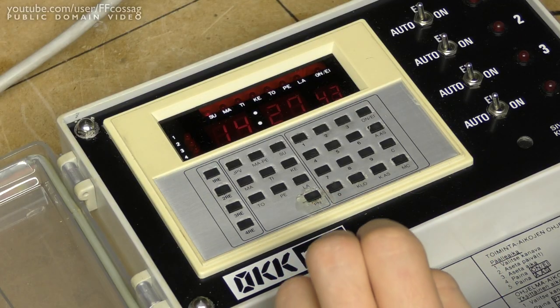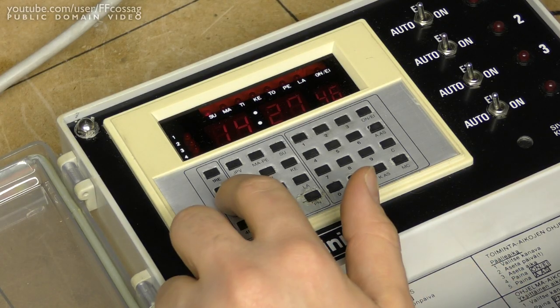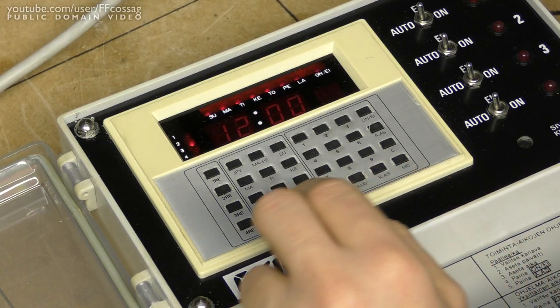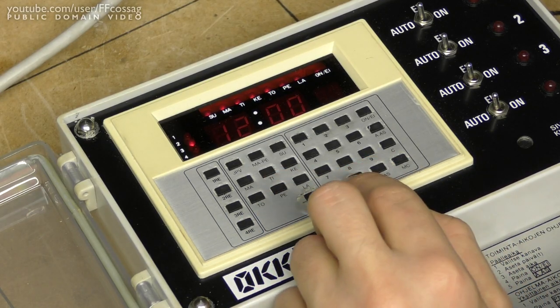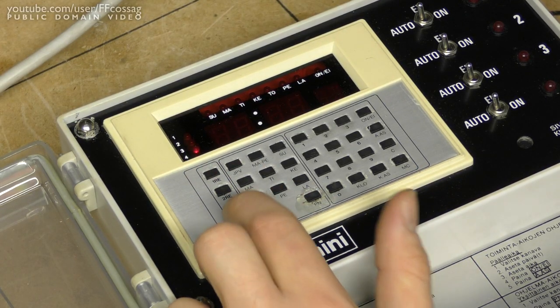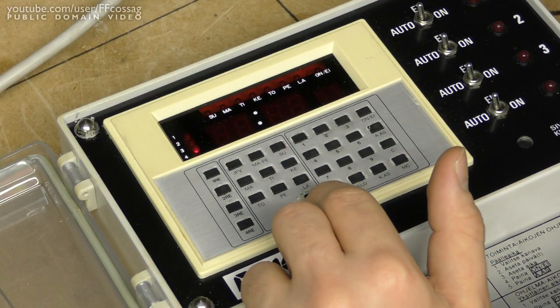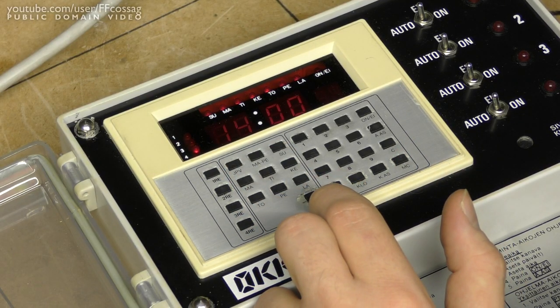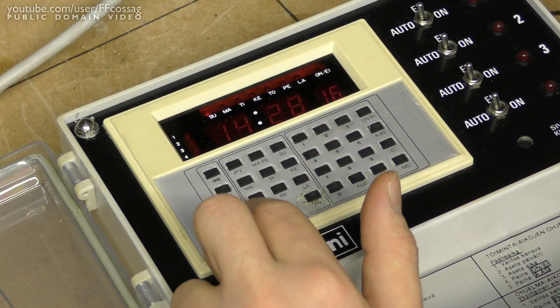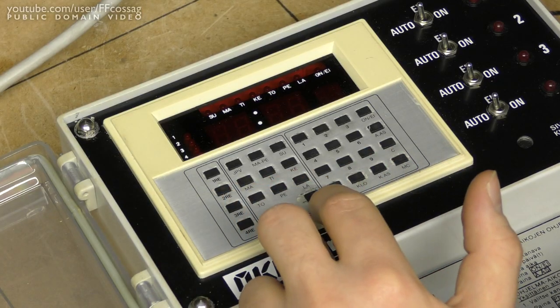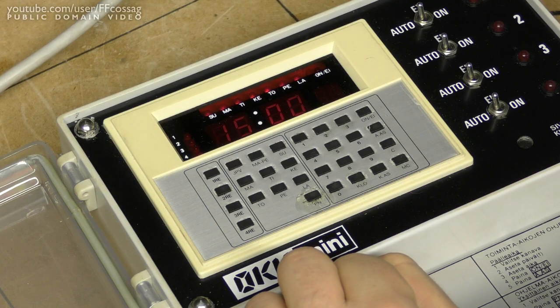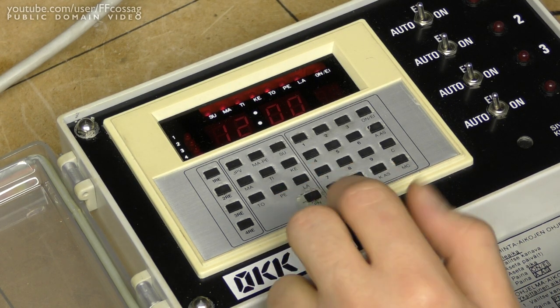You can see why the backup battery is a rather important feature in this device. Channel two should turn off at 13, yes indeed, so that's fine. Kello. Channel three should turn off at 14, so that's two hours of solar operation per day. Kello. Channel four should run for an entire three hours, turning off at 15, and indeed it does.